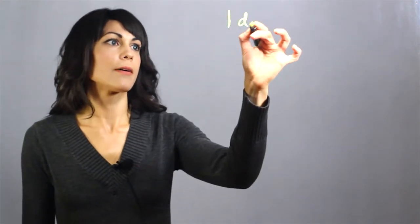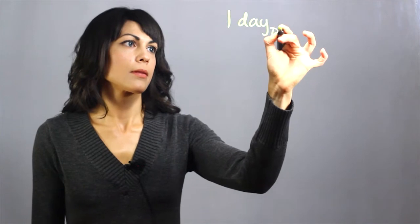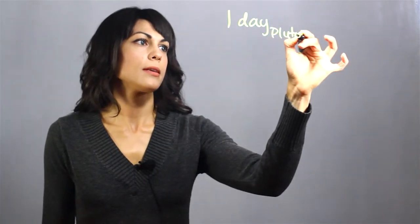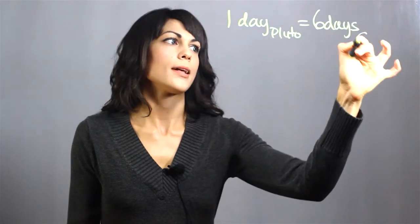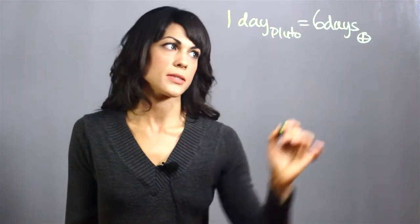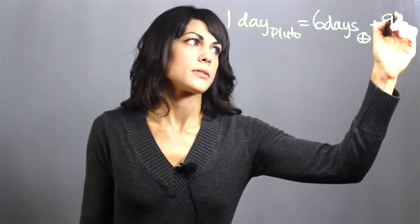So one day on Pluto is equal to six days on Earth, and we use the circle with a cross to symbolize Earth, plus nine hours on Earth.